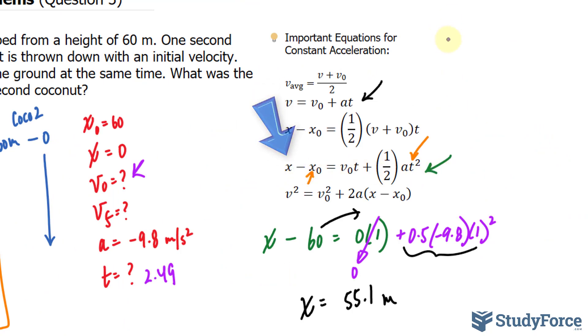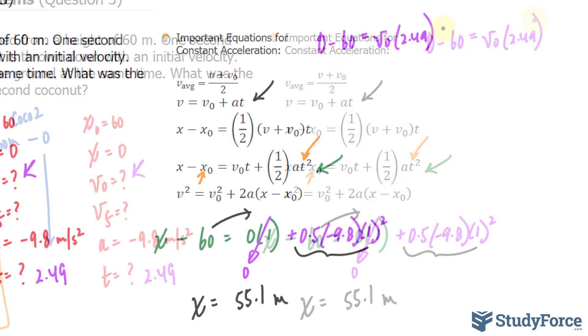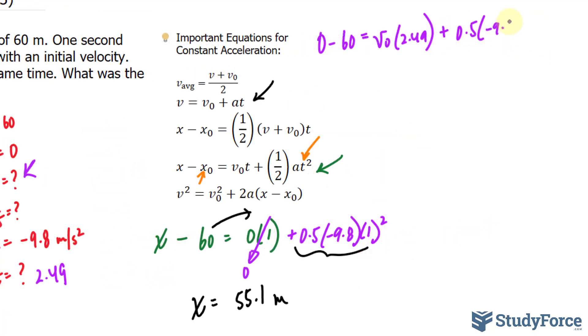So we have the final represented as x being 0 minus 60 equals what we're looking for. The time is 2.49 plus 0.5, negative 9.8. Again, the time is 2.49, raise that to the power of 2. And all we have to do is solve for that variable. So I'll take negative 60, that's the left side, and bring all of that over. So minus that big expression. We'll simplify that using our calculator in a moment, and then we divide both sides by 2.49.